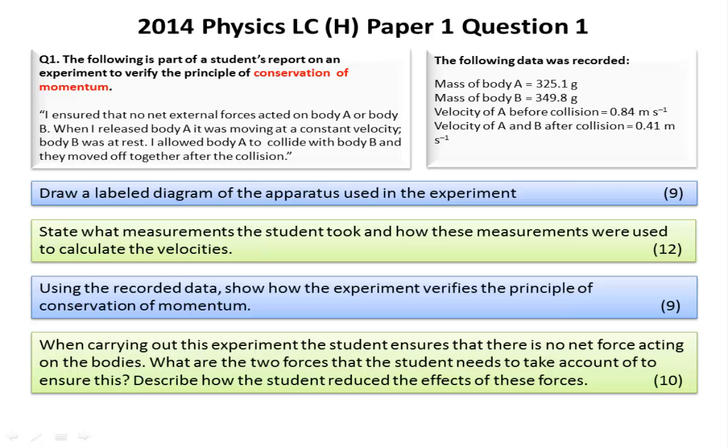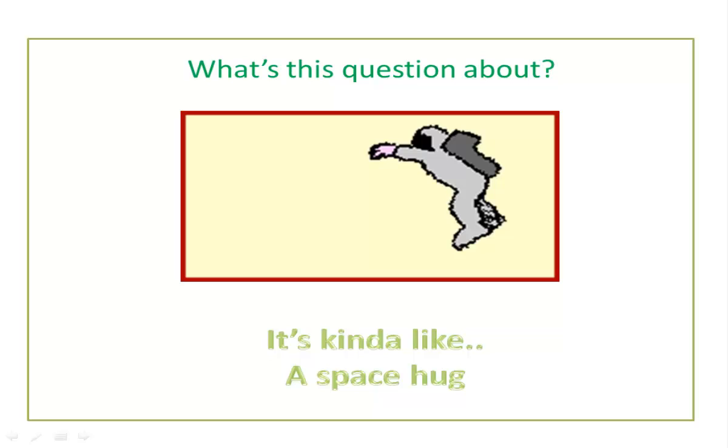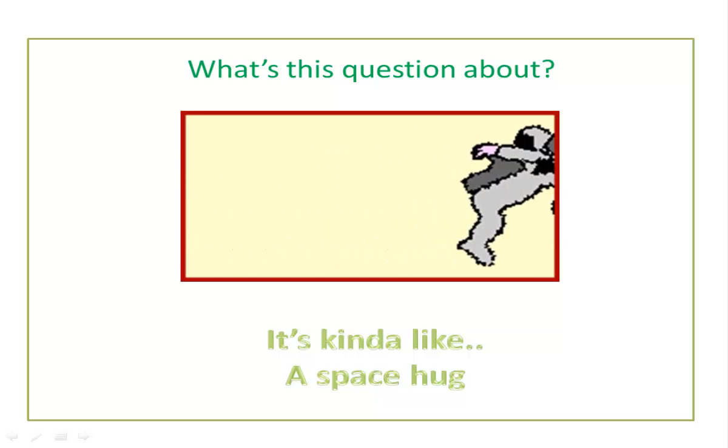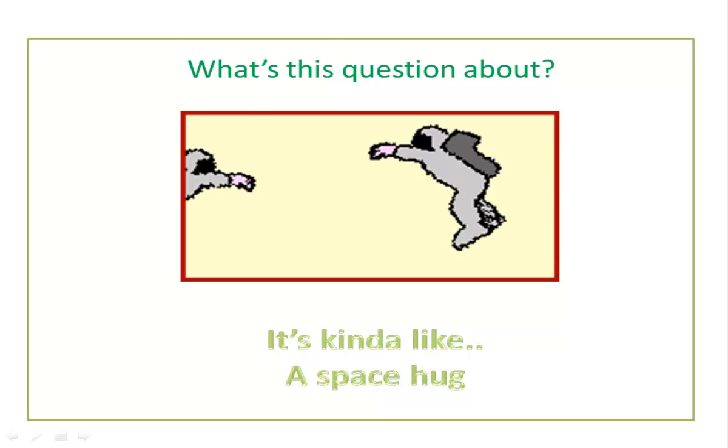Here's the solution to the 2014 conservation of momentum question that was question one. If you want to skip to any part, just click on that part of the question. You can remember this question is kind of like a space hug. It's one body comes, hits another body that's at rest, and the two drift off romantically together.